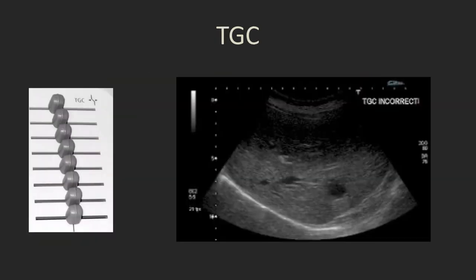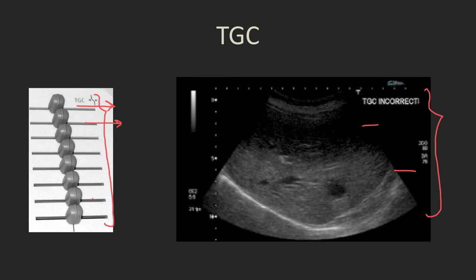Generally speaking you shouldn't need to play with the TGC, but if you have an image like this on the right where the liver should be a homogeneous shade of grey throughout but it's much darker in the near field than in the far field, then you may need to play with the TGC. This usually appears as a panel of parallel buttons somewhere adjacent to the keyboard. The top buttons correspond to the near field and the bottom buttons to the far field, and you can move these to equalize the brightness throughout.